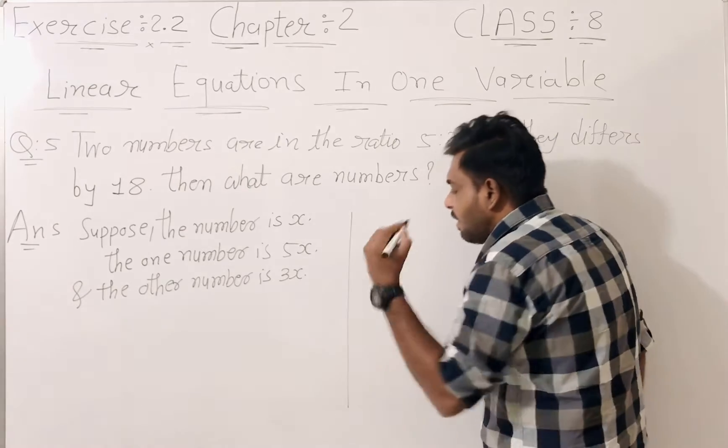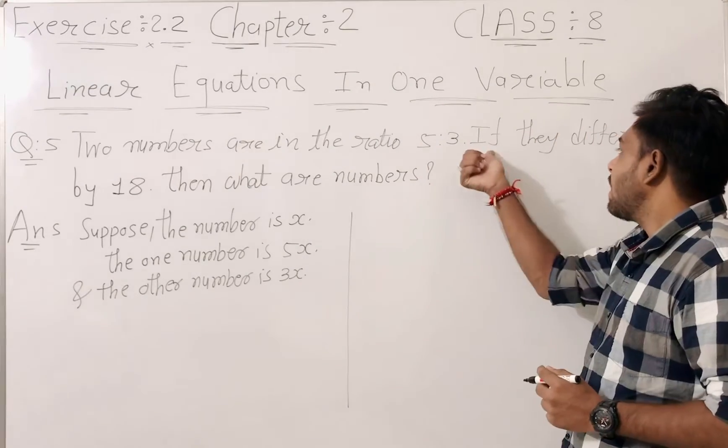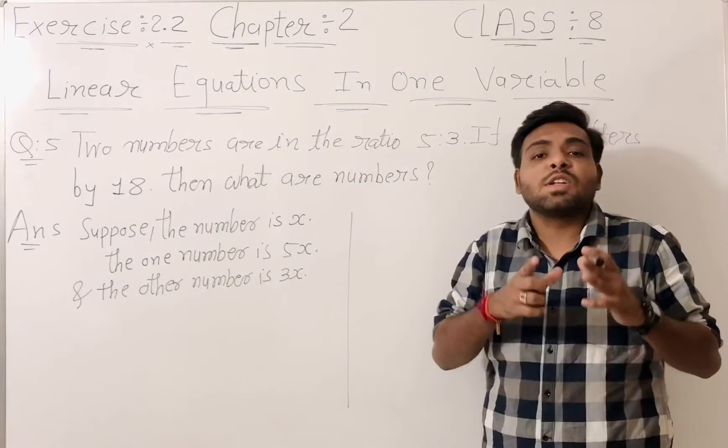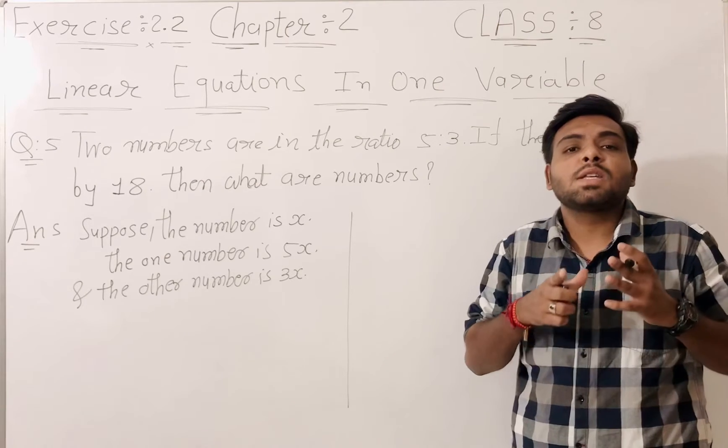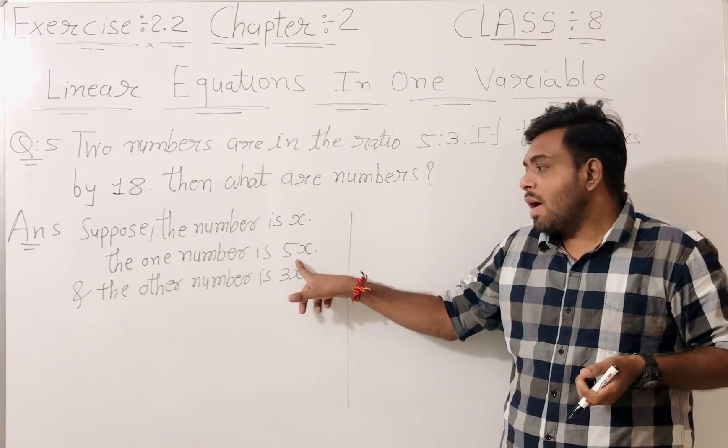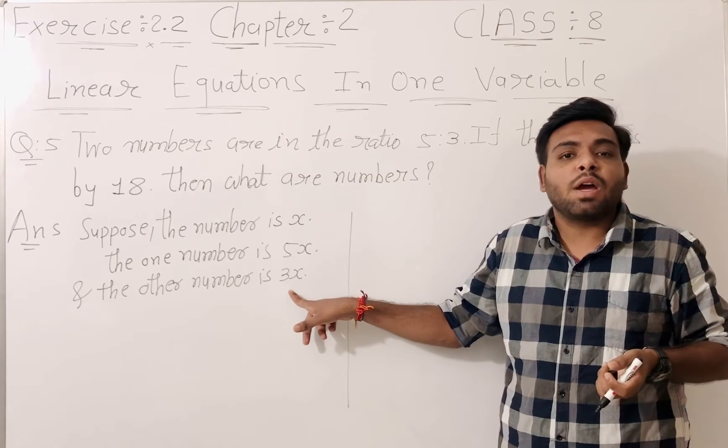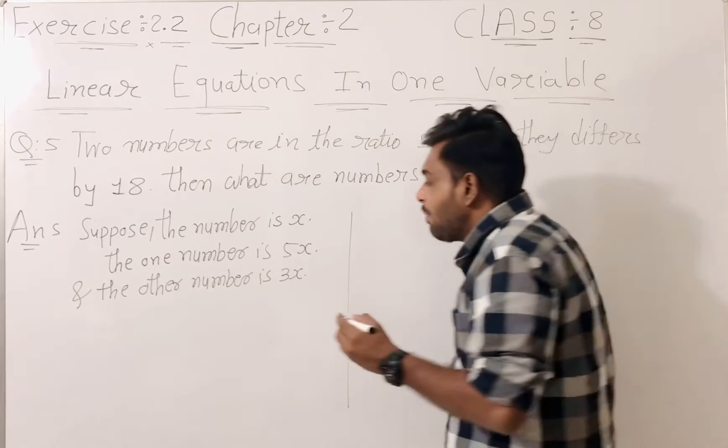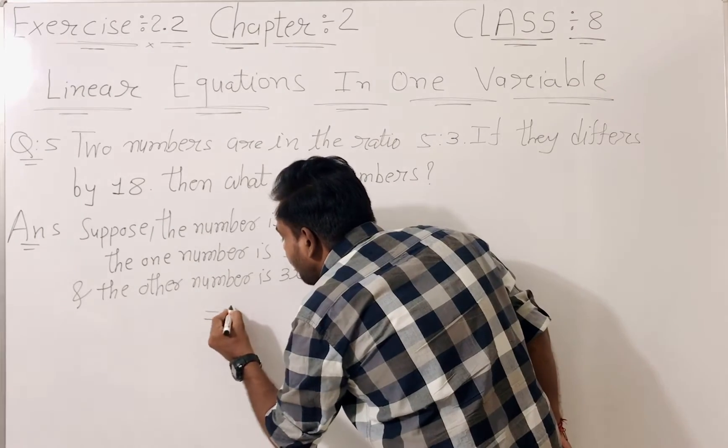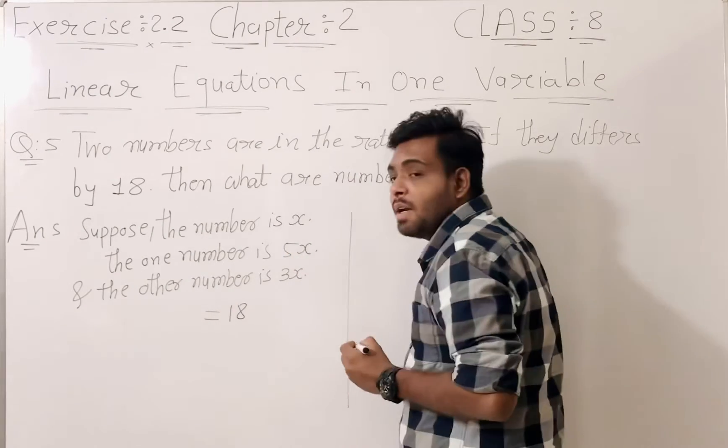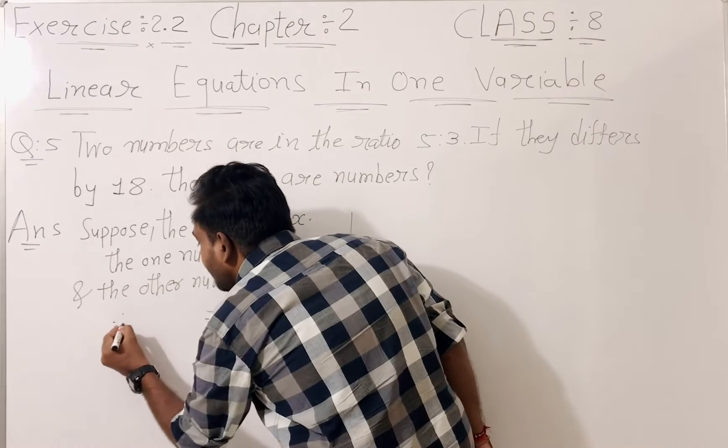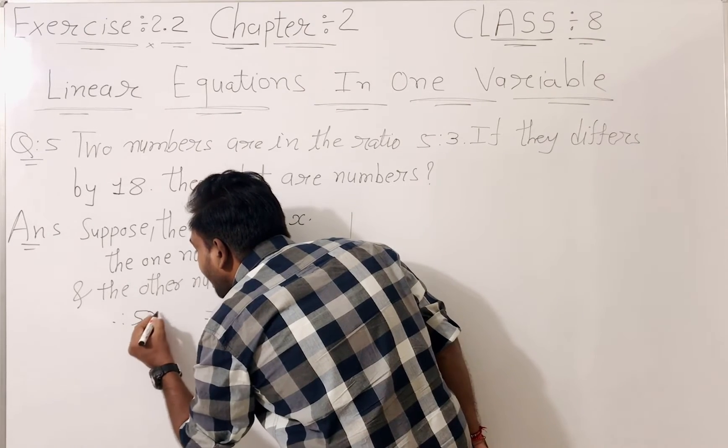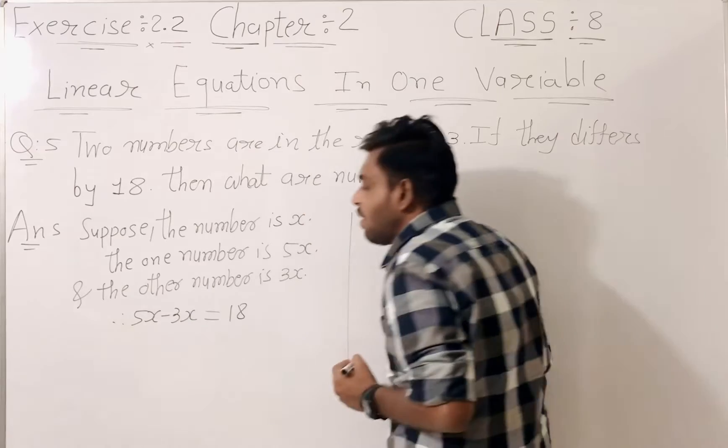And here we know that if they differ by 18, differ means different. Here we have 5x or 3x. Here we have 5x minus 3x is equal to 18.